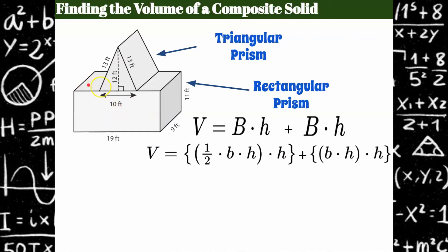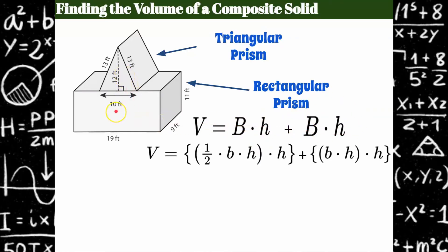It could be birdseed — it could be a birdhouse, who knows. We're going to find the volume of one prism and add the volume of the other prism, and together when we put the two volumes together it's the volume of the composite solid.